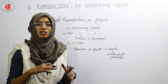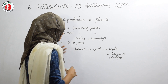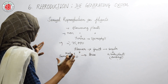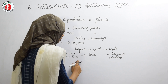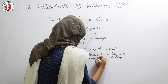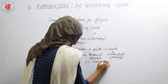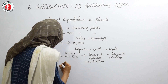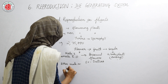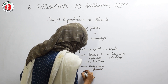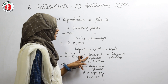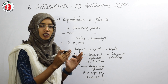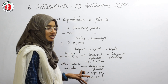We can see various reproductive organs present in flowers. Certain flowers contain both male and female reproductive organs — these are called bisexual flowers. Datura is an example of a bisexual flower. Certain flowers show the presence of either male or female reproductive organs; these are called unisexual flowers. Examples of unisexual flowers are papaya and bottle gourd.